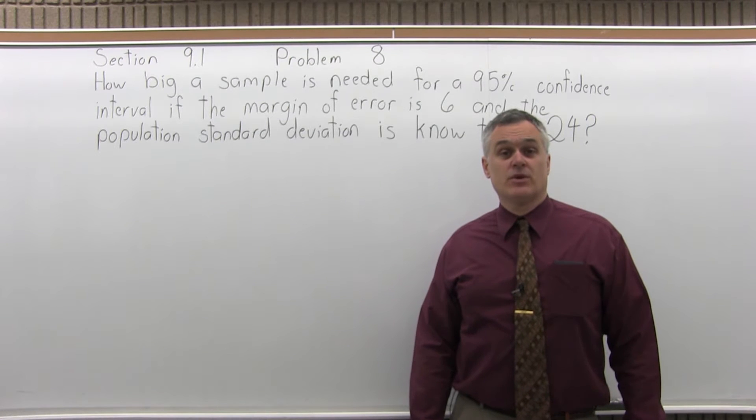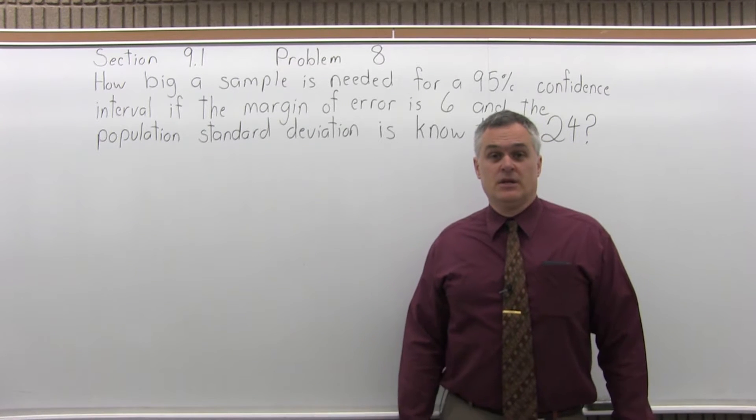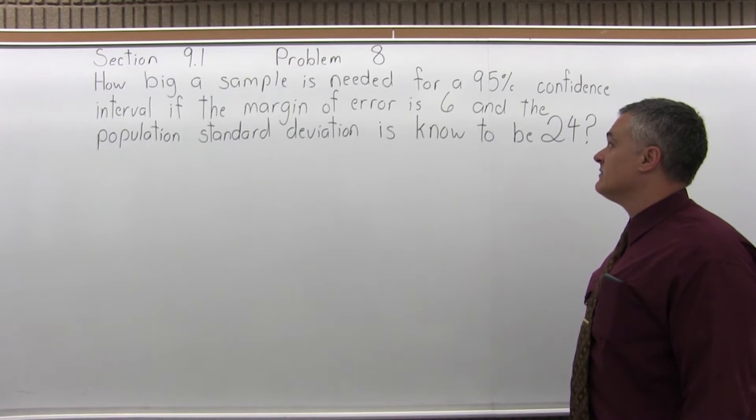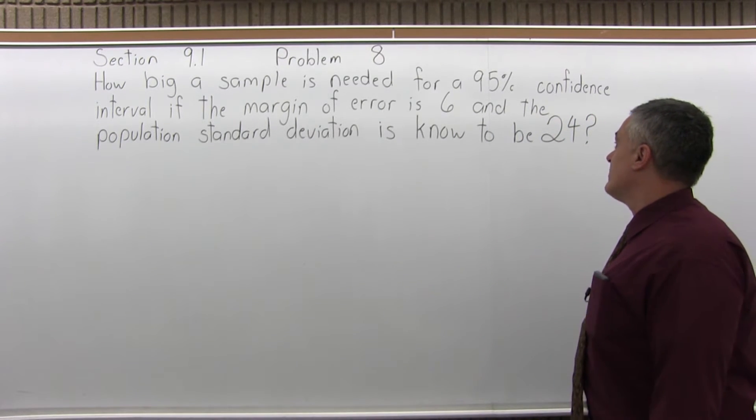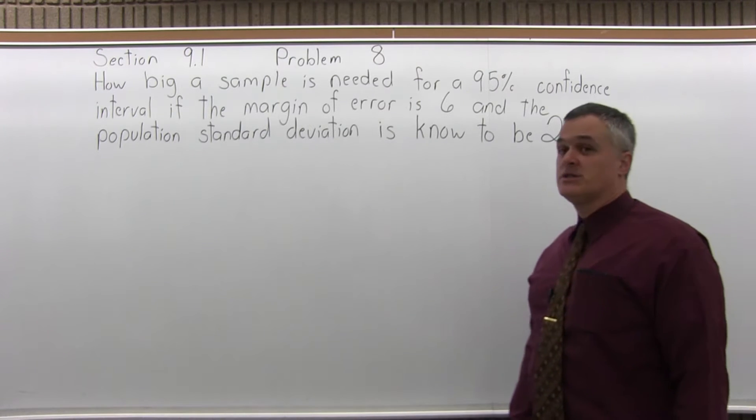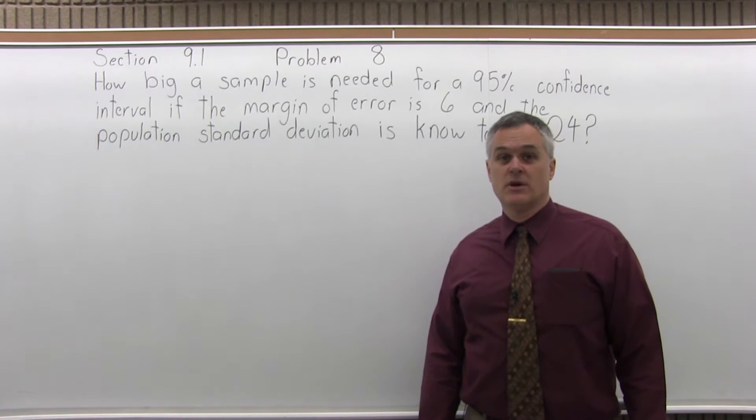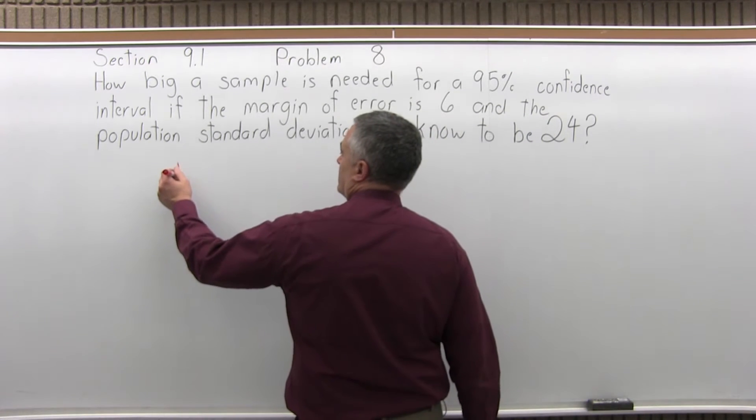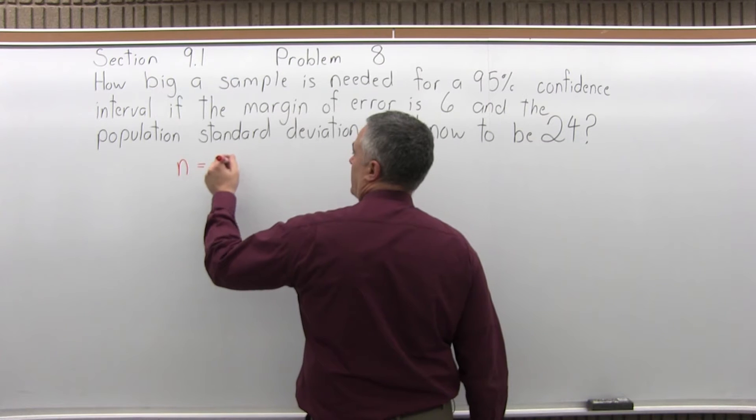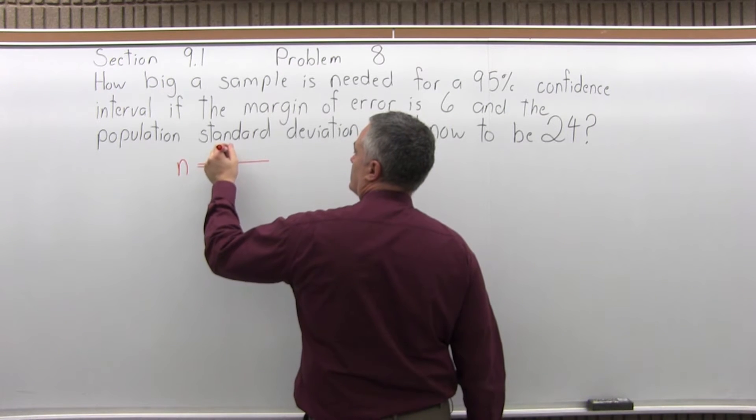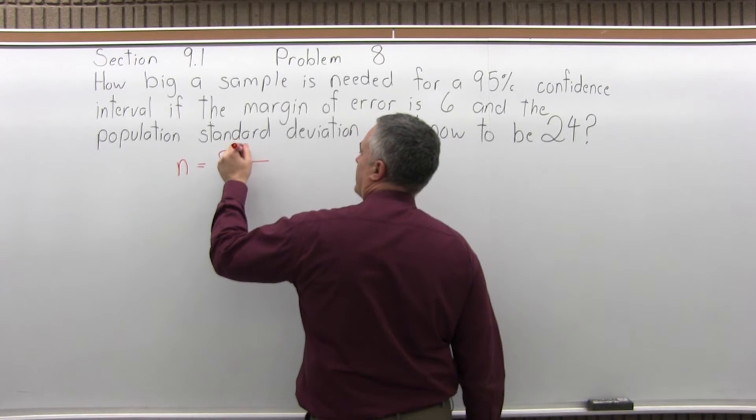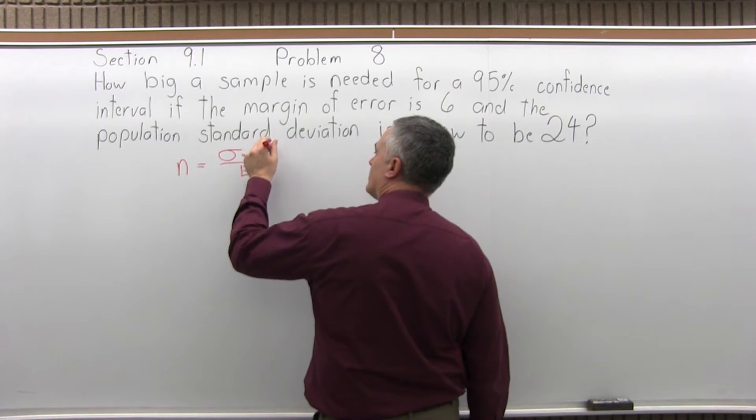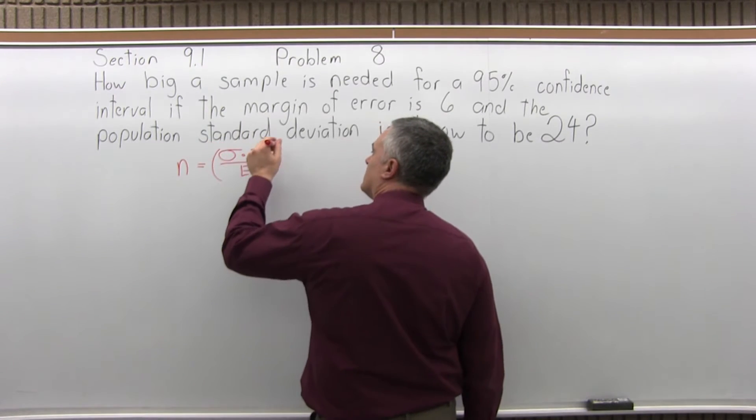This is Section 9.1, Problem 8. It says how big a sample is needed for a 95% confidence interval if the margin of error is 6 and the population standard deviation is known to be 24. So the formula to determine the sample size is n, the sample size, equals sigma times z sub c over e in parentheses to the second power.